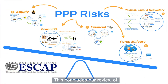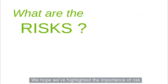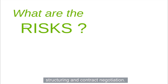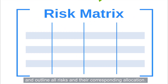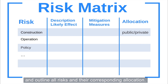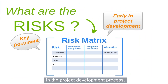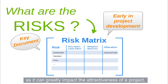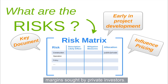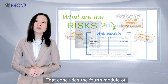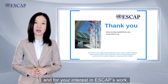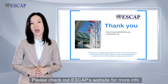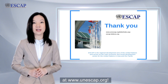This concludes our review of the main types of PPP project risk. We hope we have highlighted the importance of risk allocation as a critical factor in PPP project structuring and contract negotiation. A risk matrix is often used in contract drafting and negotiation of project structure to facilitate discussion and outline all risks and their corresponding allocation. This key document should be created early in the project development process, as it can greatly impact the attractiveness of a project. Risk allocation will also influence the profit margins sought by private investors. That concludes the fourth module of SCAP's e-learning series on public-private partnerships. Thank you for watching, and please check our website for more information at www.unescap.org.